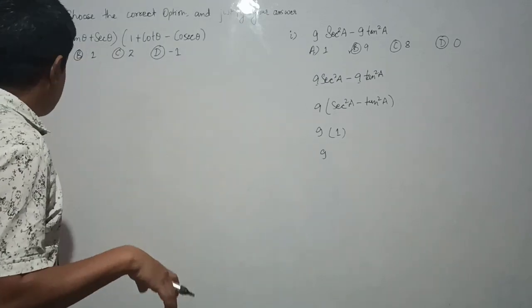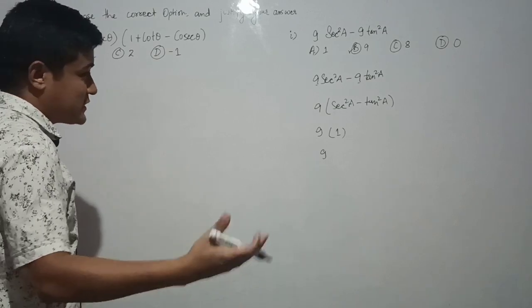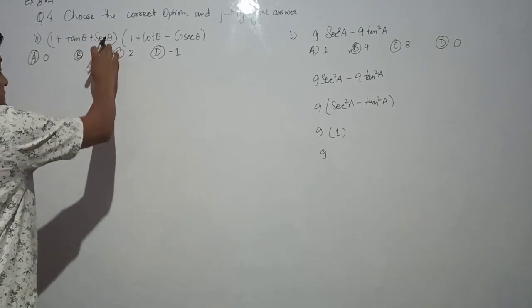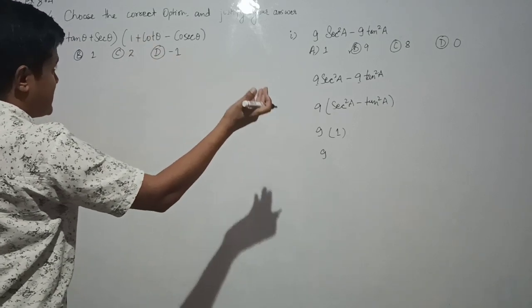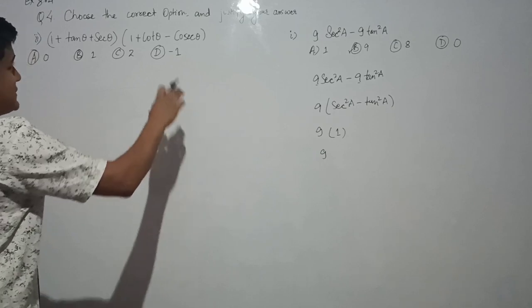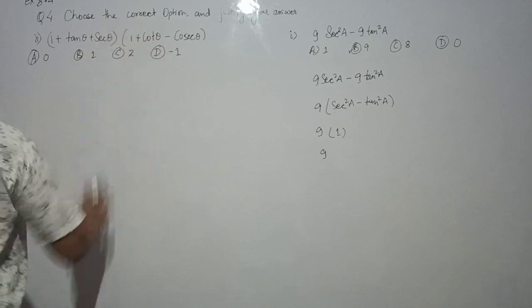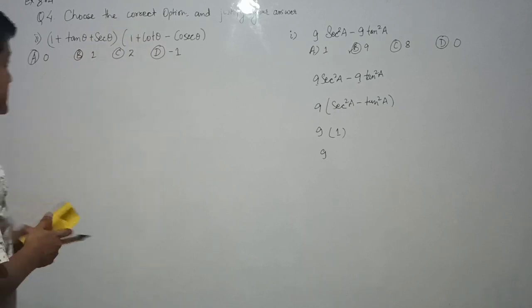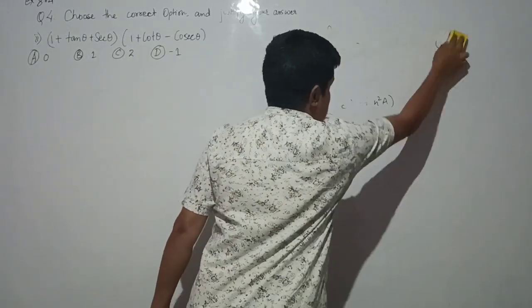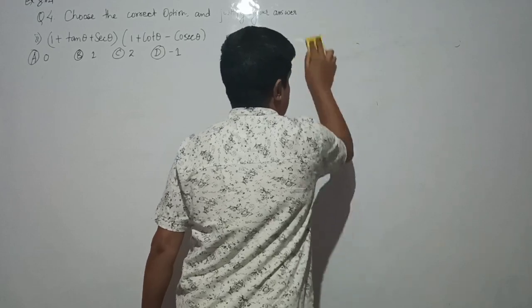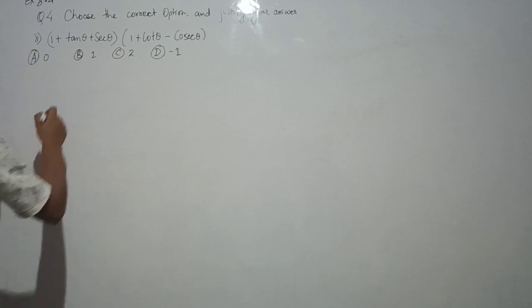The working rule is: whenever you find tanθ, convert it into sinθ/cosθ; whenever you find secθ, convert it into 1/cosθ; cotθ becomes cosθ/sinθ; and cosecθ becomes 1/sinθ. We will convert all terms accordingly.